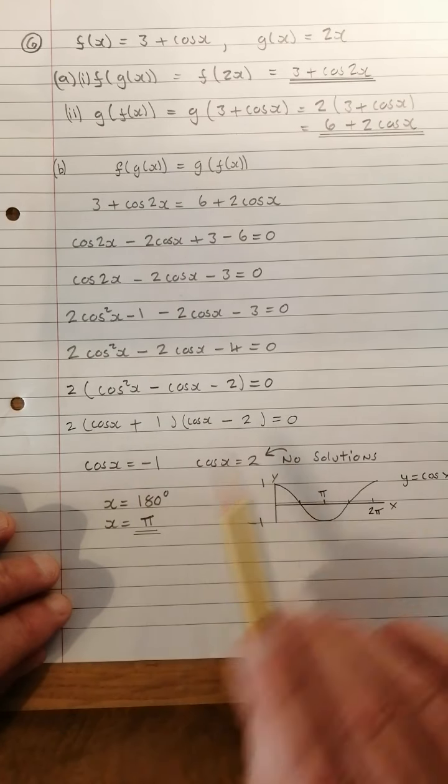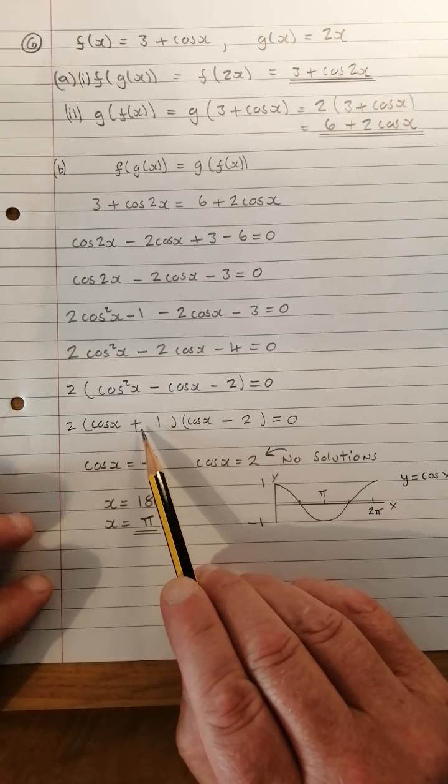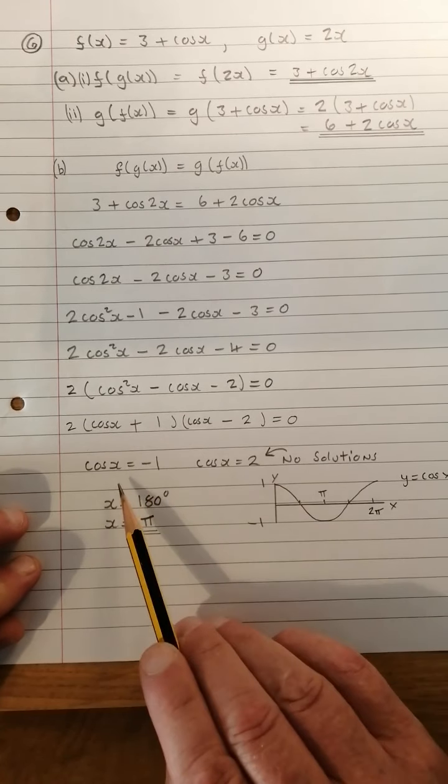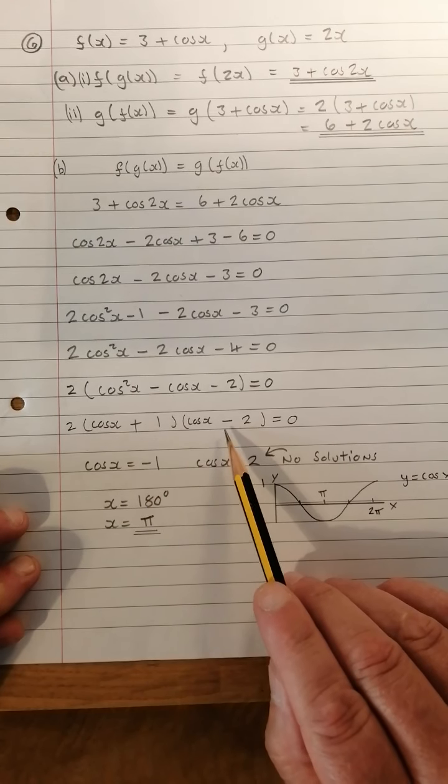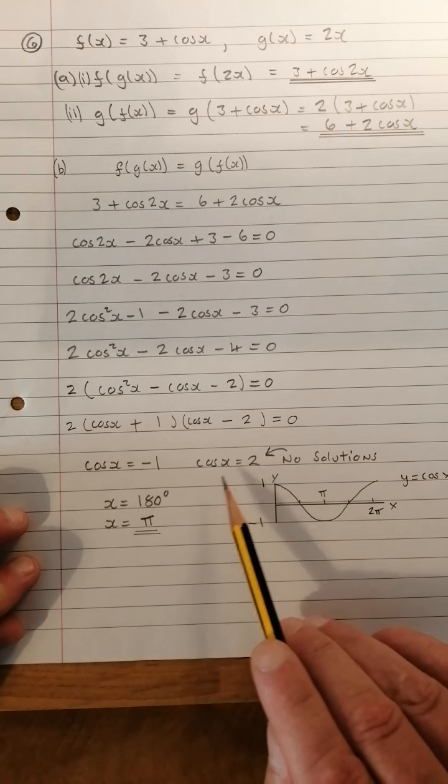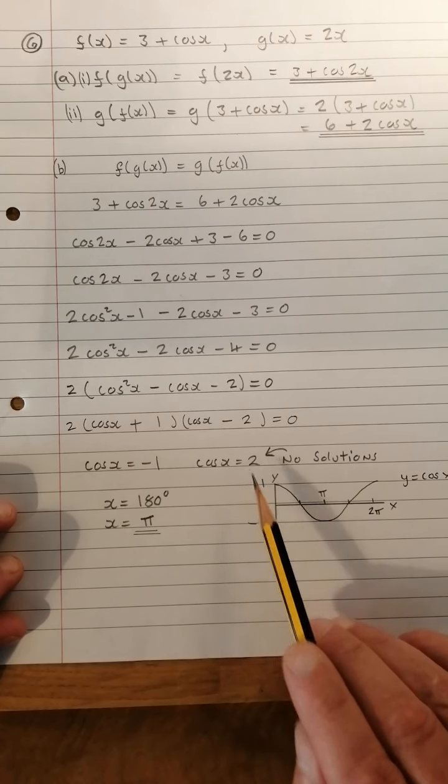So we have three things multiplying to give 0. 2 obviously isn't 0, it's a 2. So if that's equal to 0, we have cos x plus 1 equaling 0, so cos x would have to be minus 1, or cos x minus 2 equals 0, so cos x would have to be 2.